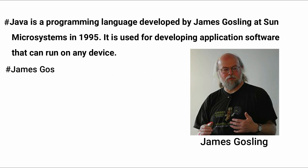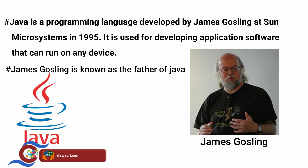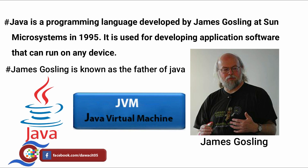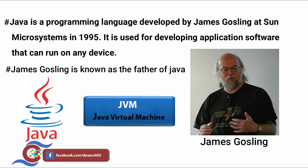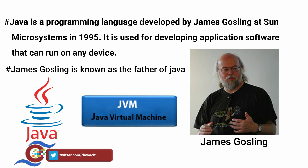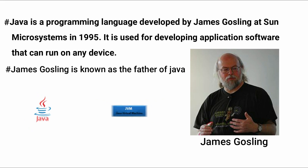James Gosling is known as the father of Java. Why? Because he created the original design of Java and implemented the language's original compiler and virtual machine. He is the first computer scientist credited with developing the Java programming language and inventing the authentic layout of Java, as well as the compiler and virtual machine. That's why James Gosling is known as the father of Java.